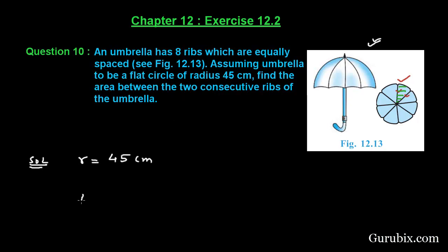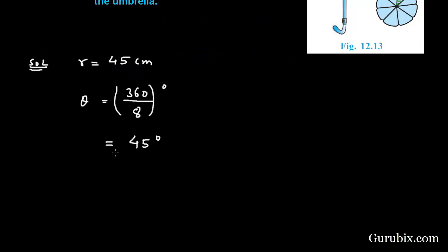And theta will be 360 by 8 degrees, because the circle has been divided into eight equal parts. This equals 45 degrees. So theta equals 45 degrees.